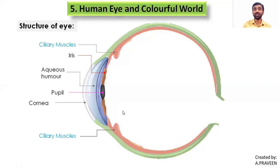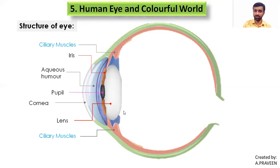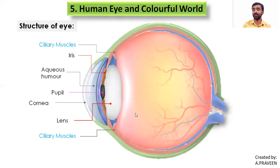Behind the iris is a crystalline lens structure — a double convex lens called the eye lens. Ciliary muscles are connected to the lens to change its focal length. After the lens, we have the vitreous humor. At the end, we have one more part — the retina — which acts like a screen on which the image is formed by the lens. The distance from the lens to the retina is fixed: 2.50 centimeters.